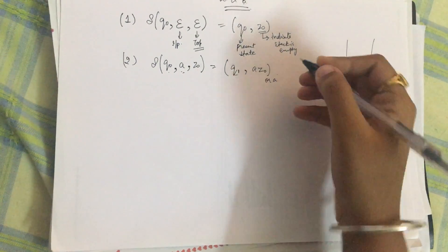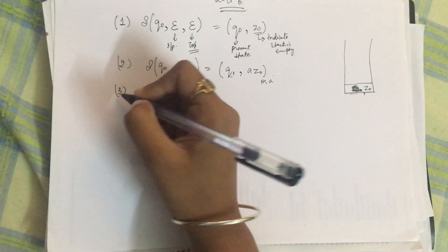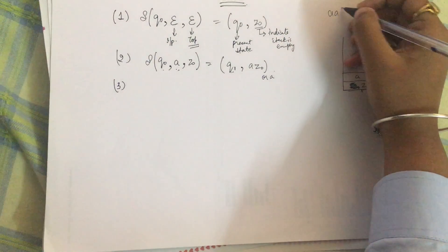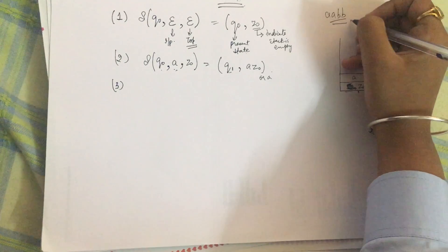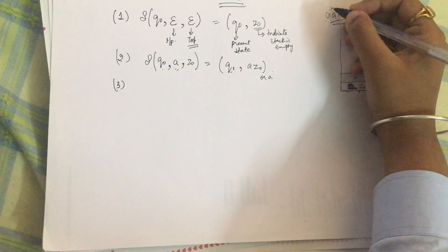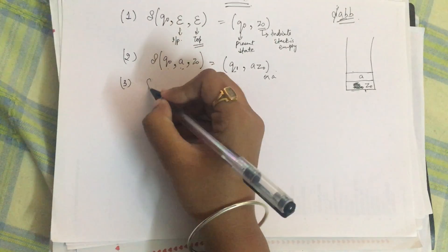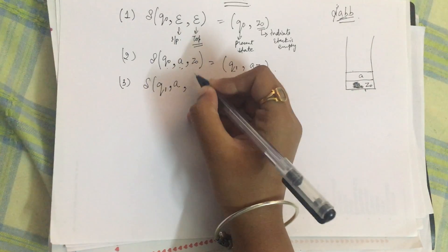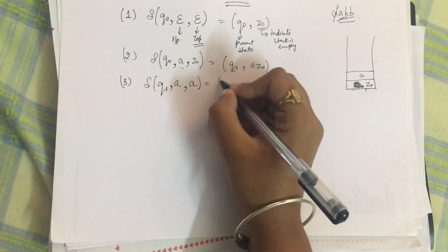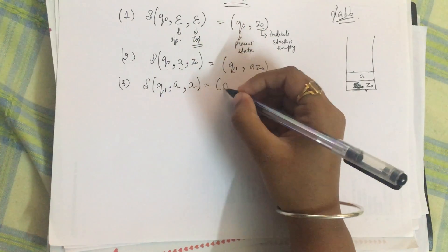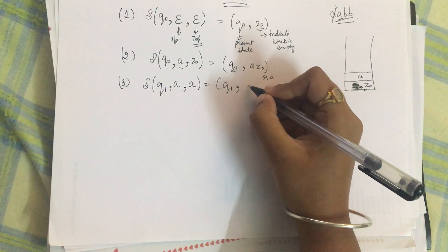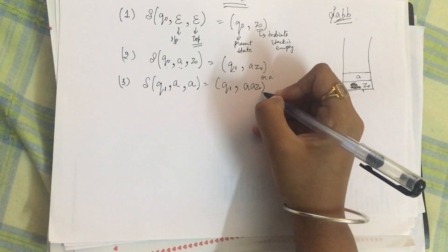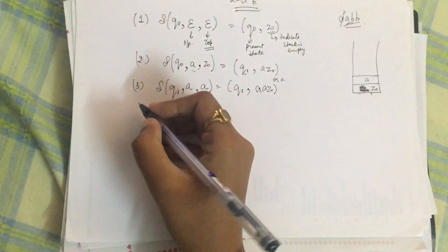For the third transition, suppose the string is 'aabb'. The first 'a' has been pushed into the stack. Now for the second 'a': transition q1, input 'a', top of stack has 'a' — same state, same input symbol, so there is no change of state — and the stack becomes 'a a z naught'.